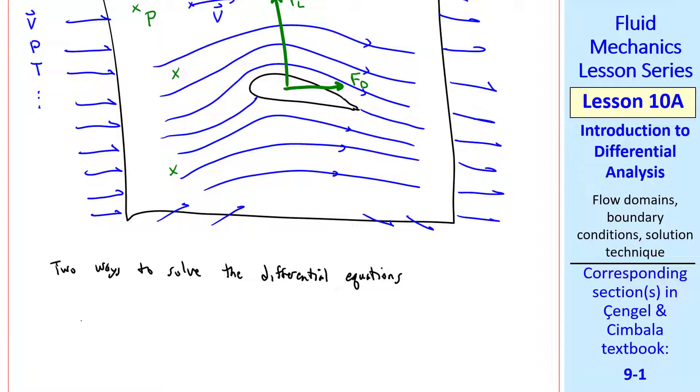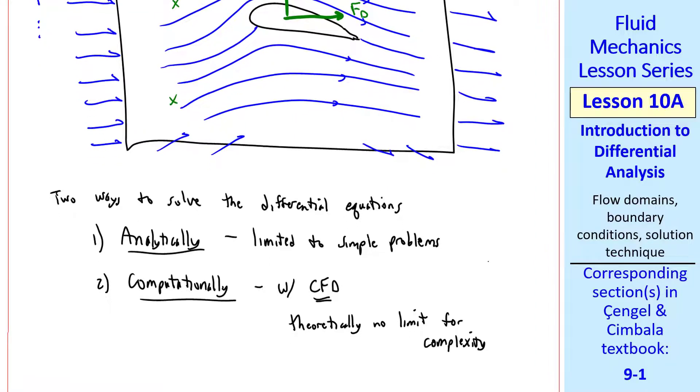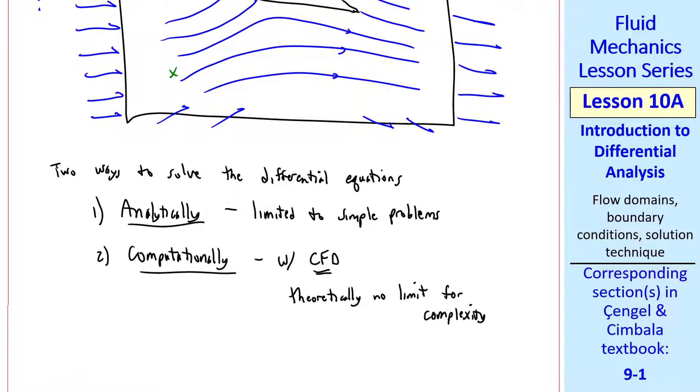As I mentioned, there are two ways to solve the differential equations. One, analytically, in other words, with pencil and paper. This is limited to simple problems, such as fully developed pipe flow, or computationally, with computational fluid dynamics. Theoretically, there's no limit for the complexity of flows that you can solve with CFD. Practically, however, we do run into limits based on computer speed, memory, and other limitations of a computer analysis. In this course I'll show you some analytical solutions, and we'll briefly introduce CFD.